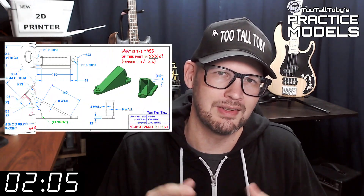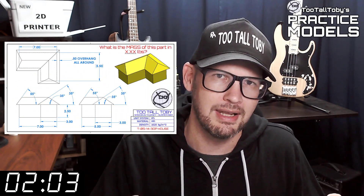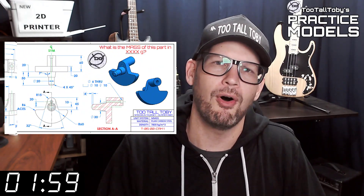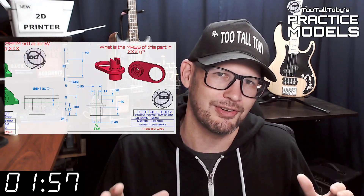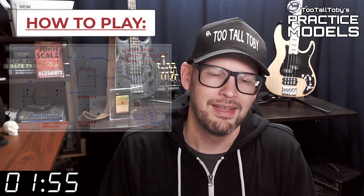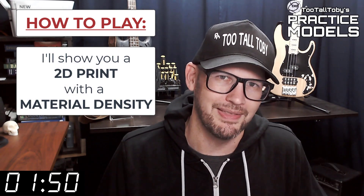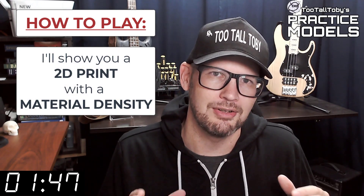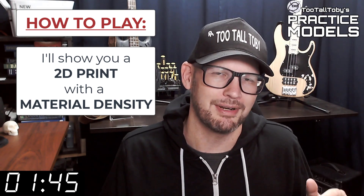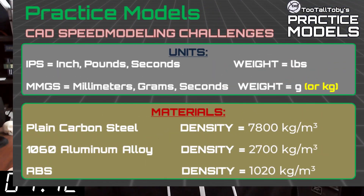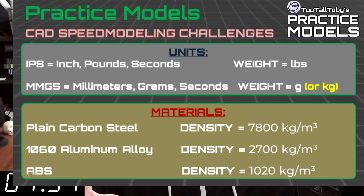If you're here for the first time, welcome. The goal of this video series is to provide you with good quality 2D prints that have all the dimensions and information you need to create a 3D model. On that print you're going to see a material property and a material density — it's going to be one of these three material properties. So take a moment, grab a screen capture of what's on the screen right now and be sure that your materials in your library match these properties.